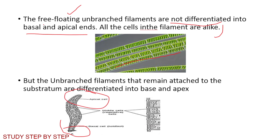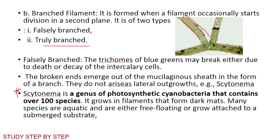If the filaments are unbranched and remain attached to the substratum, they are differentiated into base and apex. That is: free-floating unbranched filaments are not differentiated into basal and apical ends, whereas unbranched filaments attached to substratum are differentiated into base and apex.